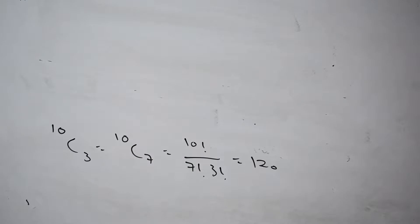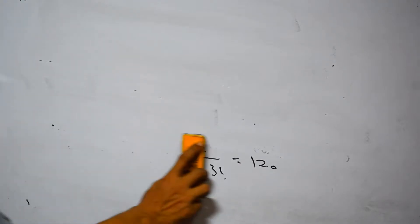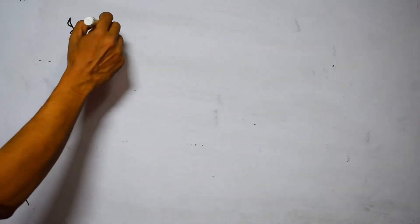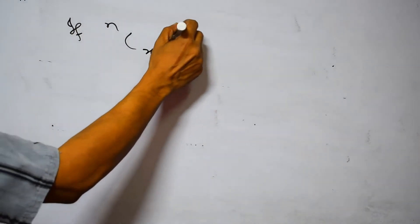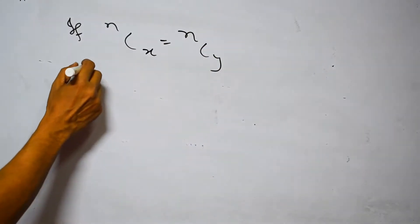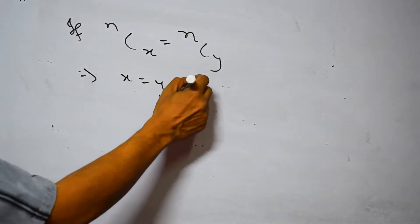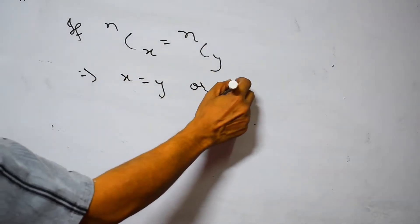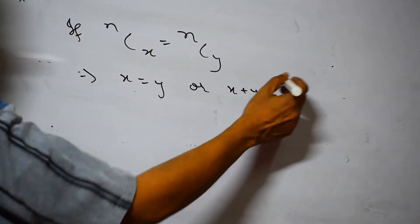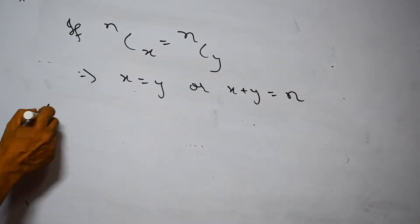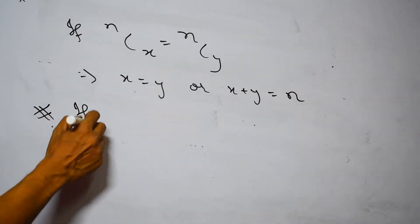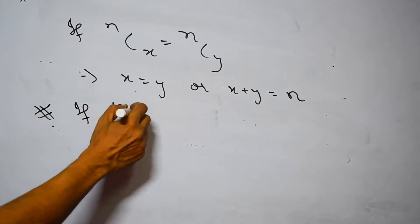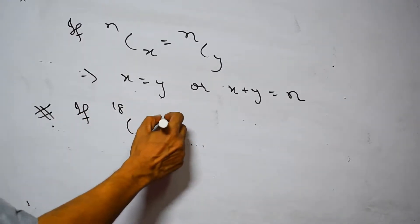Using this idea, we have an important relation: if NCx equals NCy, then either x equals y, or x plus y equals n. This is very important for solving certain types of questions, such as: if 18C(r+2) equals 18Cr, find r.